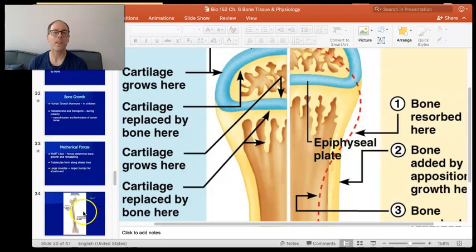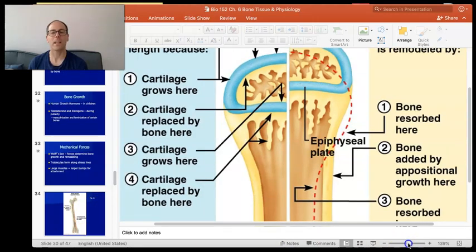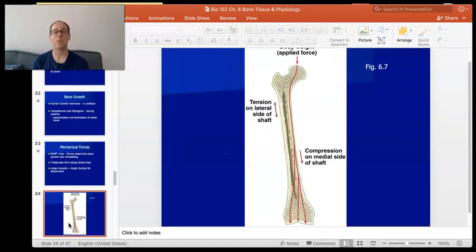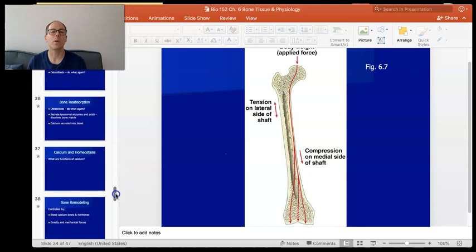The other thing that affects bone growth is mechanical stress. You guys have probably been told it's a good idea to get up and move around and do exercise. One of the benefits is when you put stress on a bone, it activates osteoblasts and they actually build bone where the bone is being stressed. Anytime you see a bump on the bone like this, usually those bumps mean that a muscle is attached. If that muscle gets bigger, the bump gets bigger to accommodate the force that the muscle is putting on it.